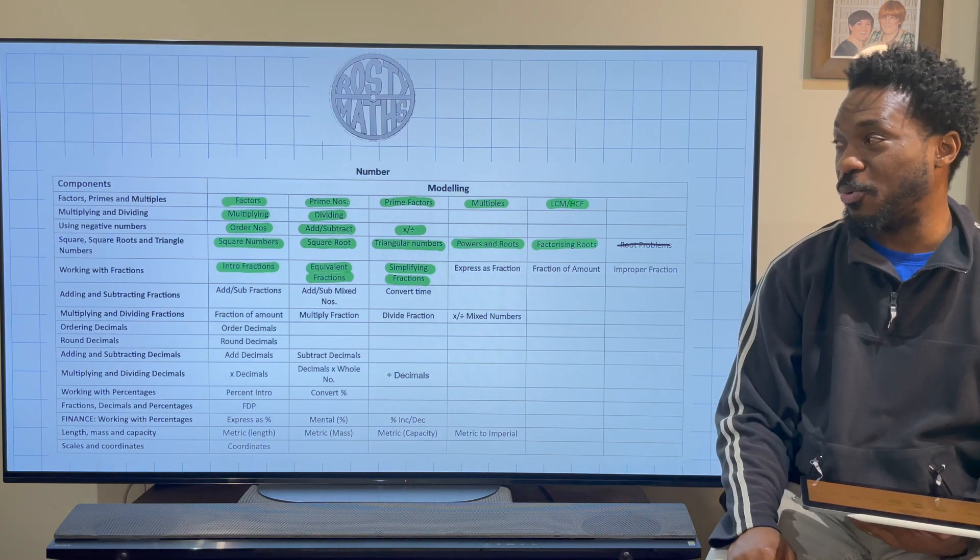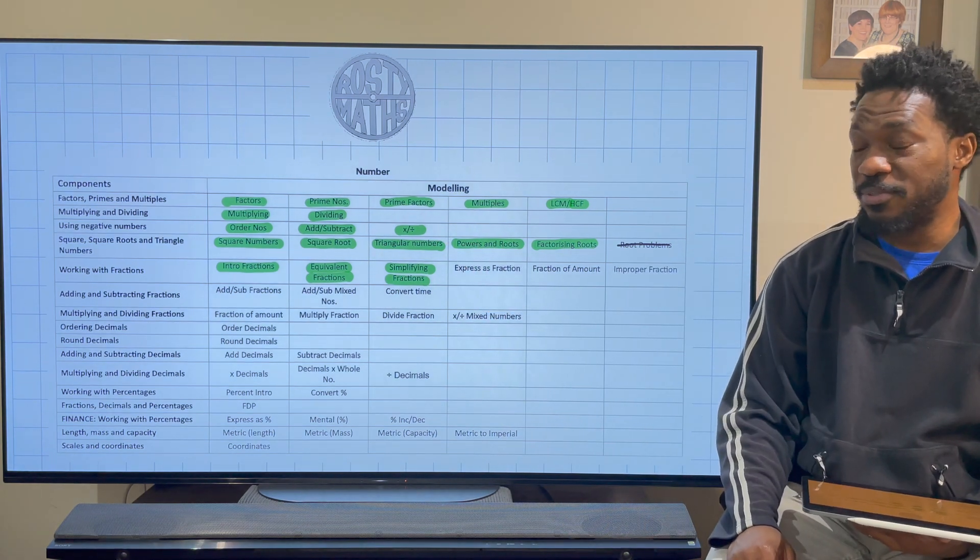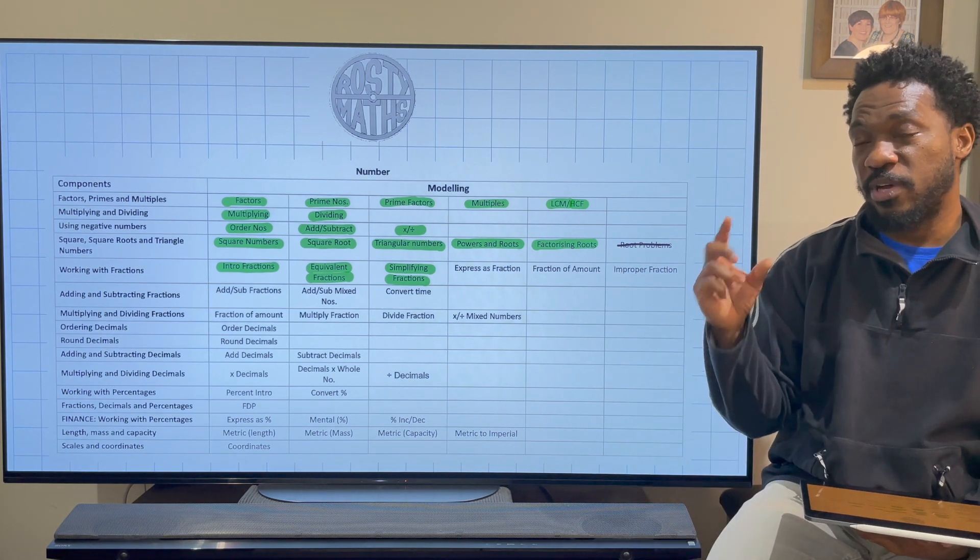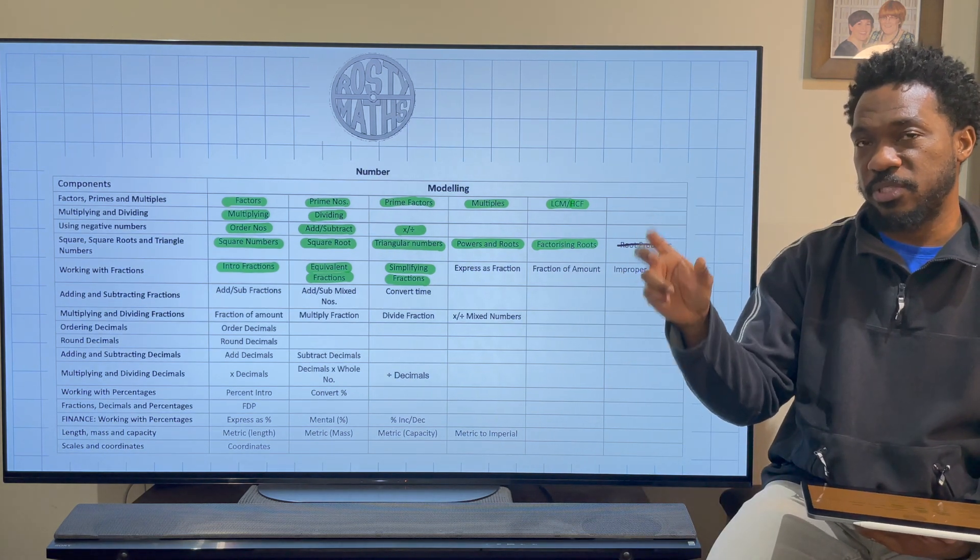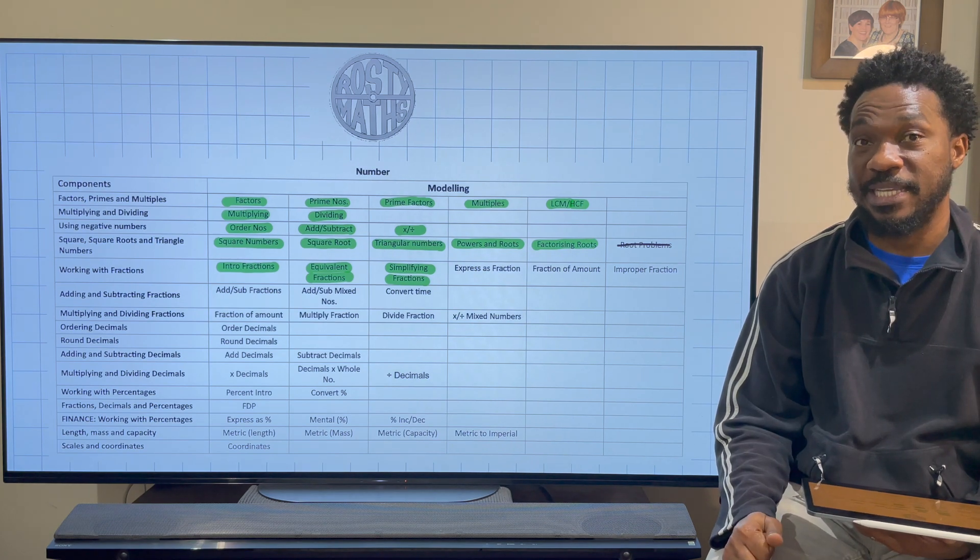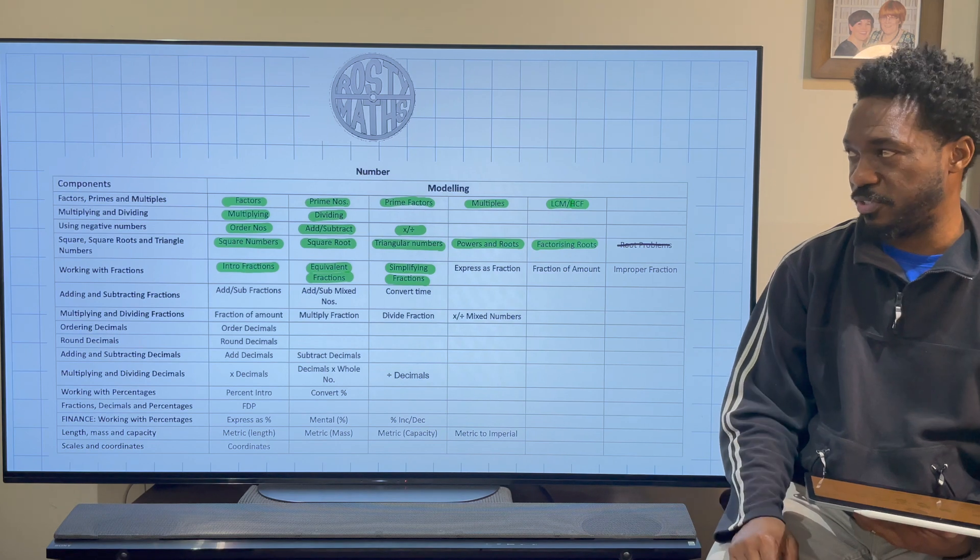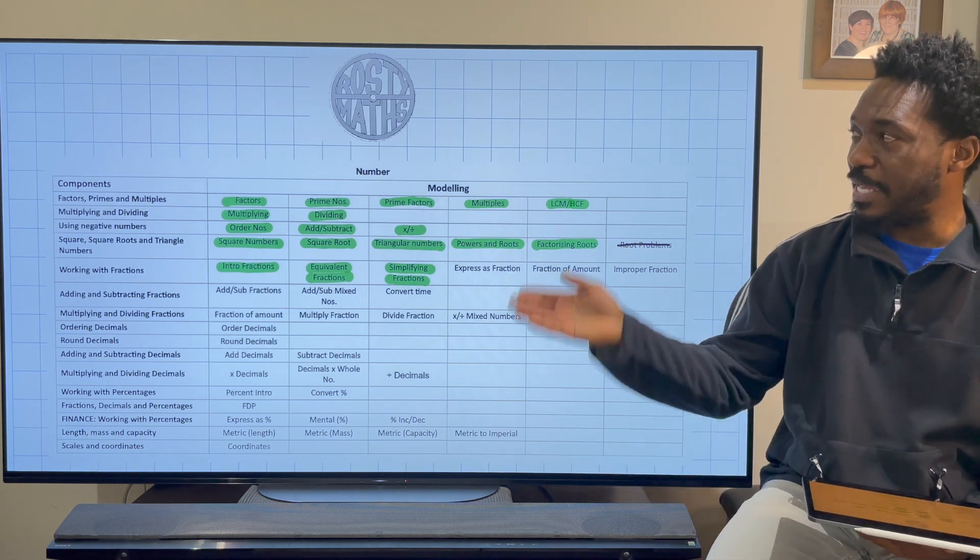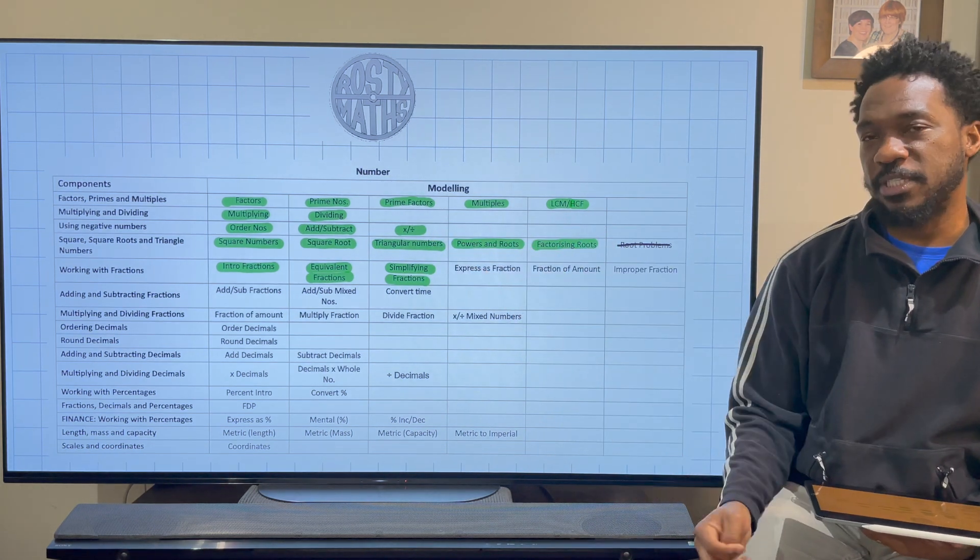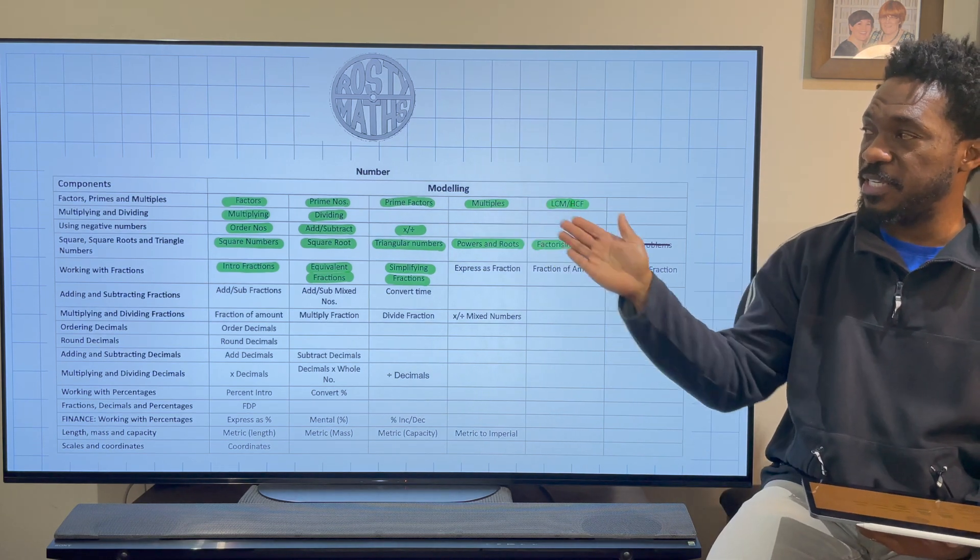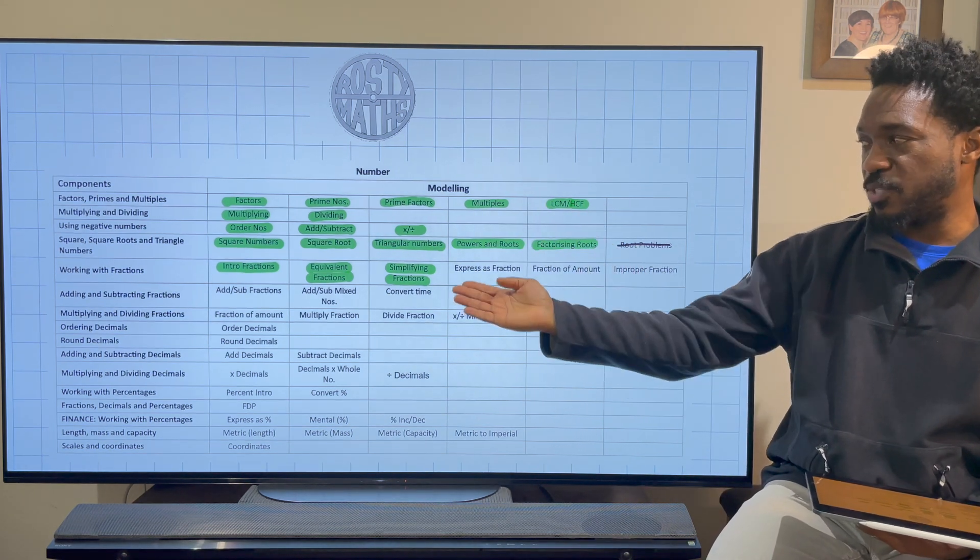I've highlighted those already. If you are new to my channel, what I am actually doing is running through a series of number topics that you will do in Year 7. So you're 11 to 12 years old, and I have done them in a specific order because the topics feed back into each other as we go through.